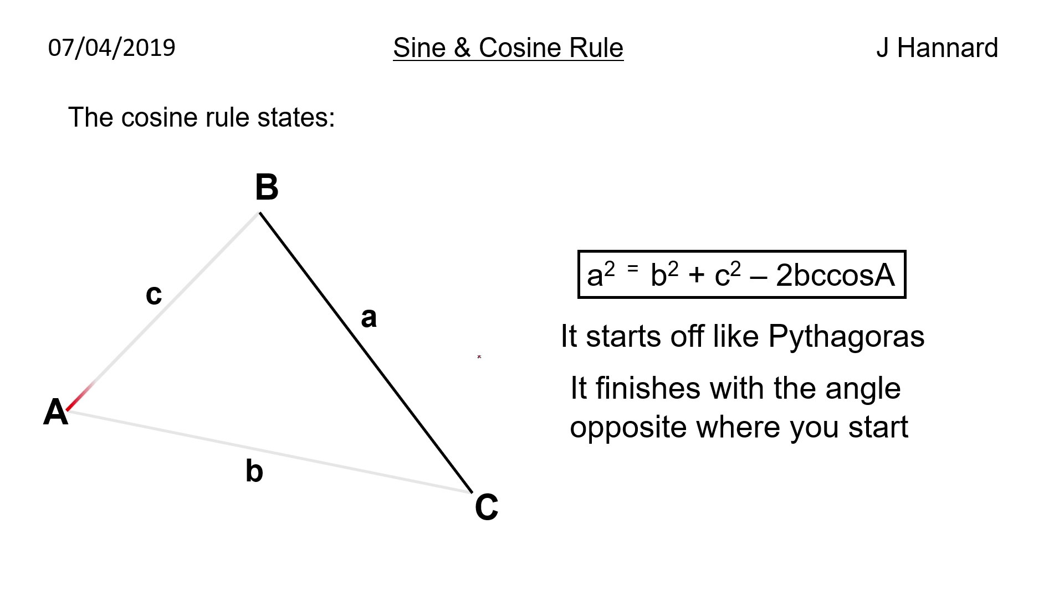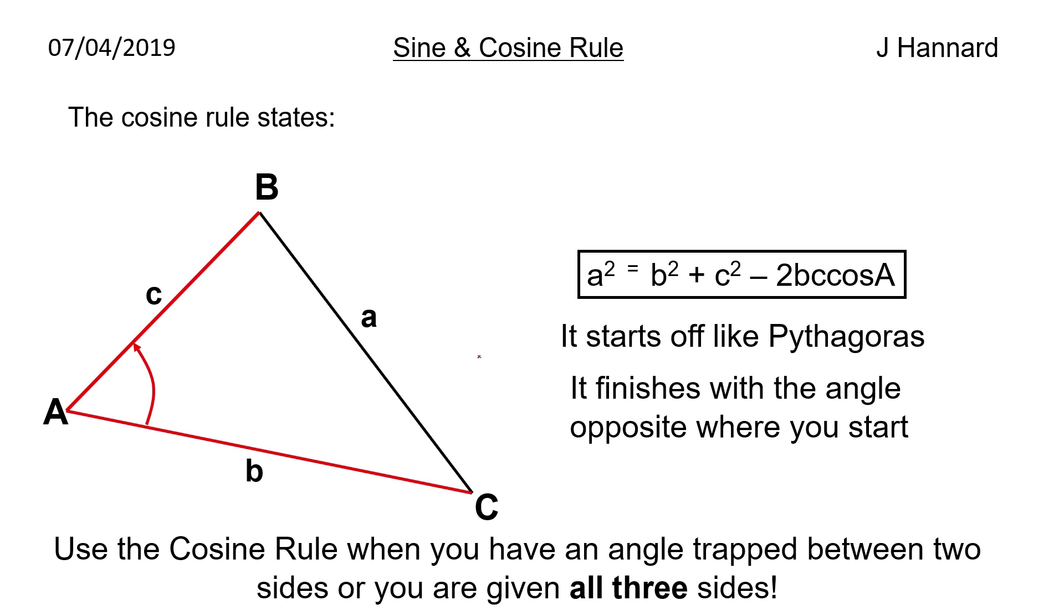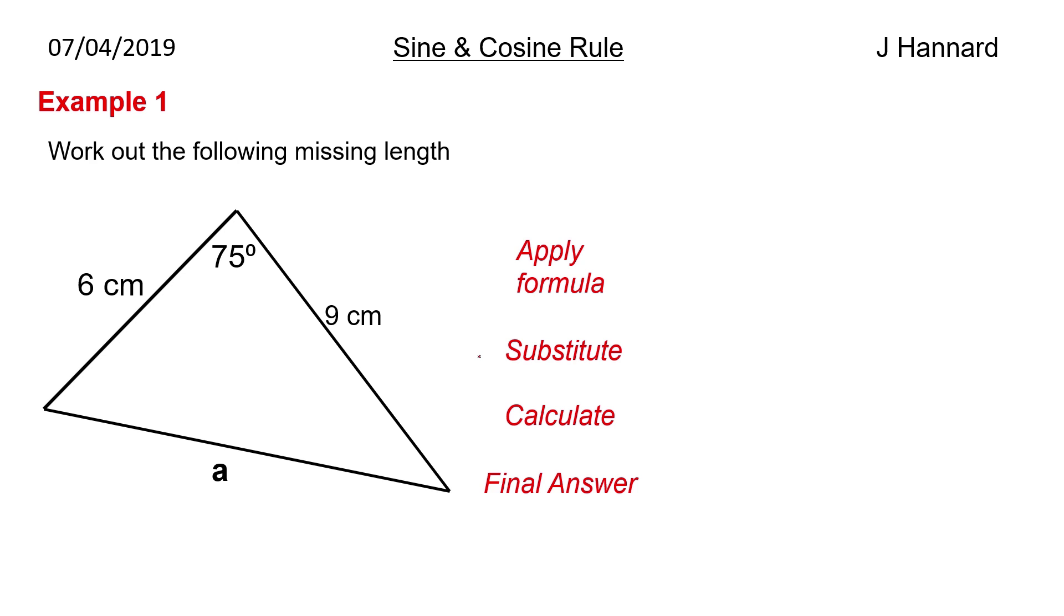So if you have a look at it, I don't know why it was completely grey there but there you go. It only comes into effect if you've got an angle trapped in between two sides or you were given all three sides. So that is when you know to use the cosine rule. If it's trapped in between like a pair of scissors and if you're given all three sides, so that's the only time you can ever use the cosine rule. So let's do an example then.